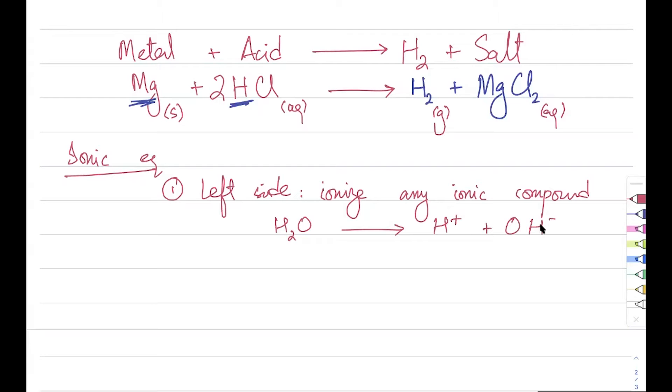If you have HCl for example, it will split up into H positive and Cl negative. If you have NaCl, it will split into Na plus and Cl negative. That's what happens on the left side. If you have any ionic compound, split that, ionize that. What do you do on the right side?